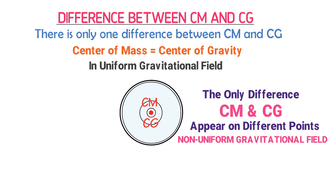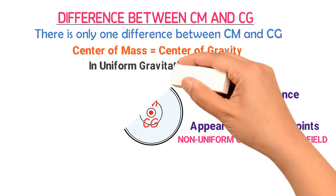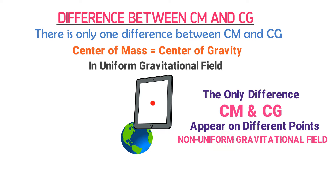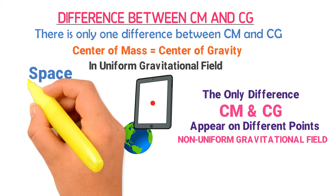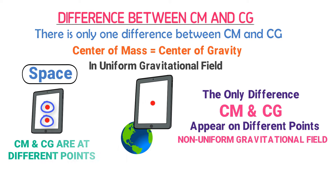The only difference is that center of mass and center of gravity will appear to act at different positions in a non-uniform gravitational field — meaning far away from the earth's surface. For example, on earth, the center of mass and center of gravity of your cell phone would be at the same point, but when you go to space, they will no longer be at the same point. Remember this as the only difference between center of mass and center of gravity.